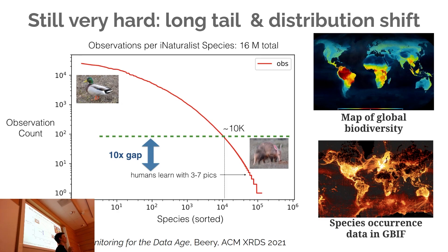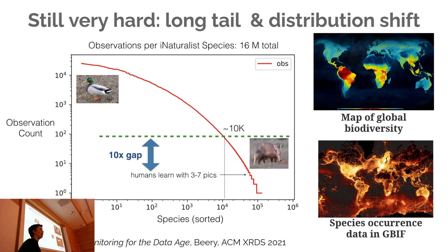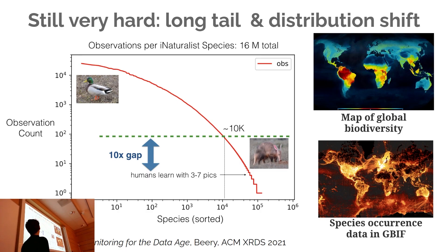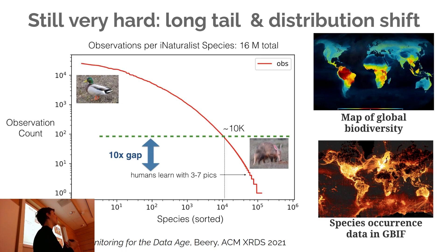Diverse and representative are important points. A hundred examples that are highly spaced and poorly correlated might effectively count as one. If it takes that much data, there's still an order of magnitude of species we cannot accurately predict. Humans are able to learn pretty well with something like three to seven examples, though often we're shown images and provided explanations — human brains are a bit more complex. But there's definitely a big gap between what we can do as humans and what machine learning models can do in terms of learning from a few examples.